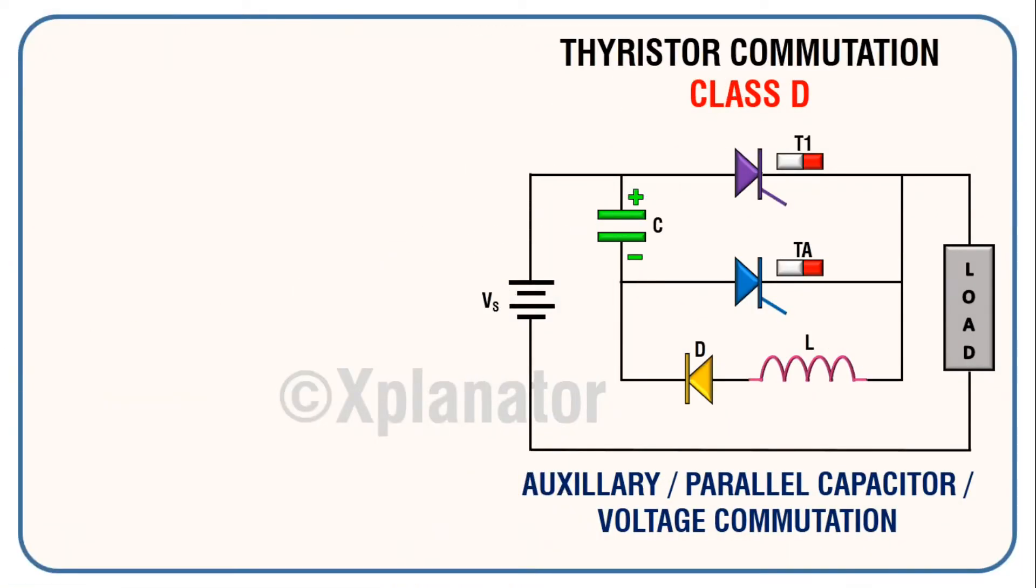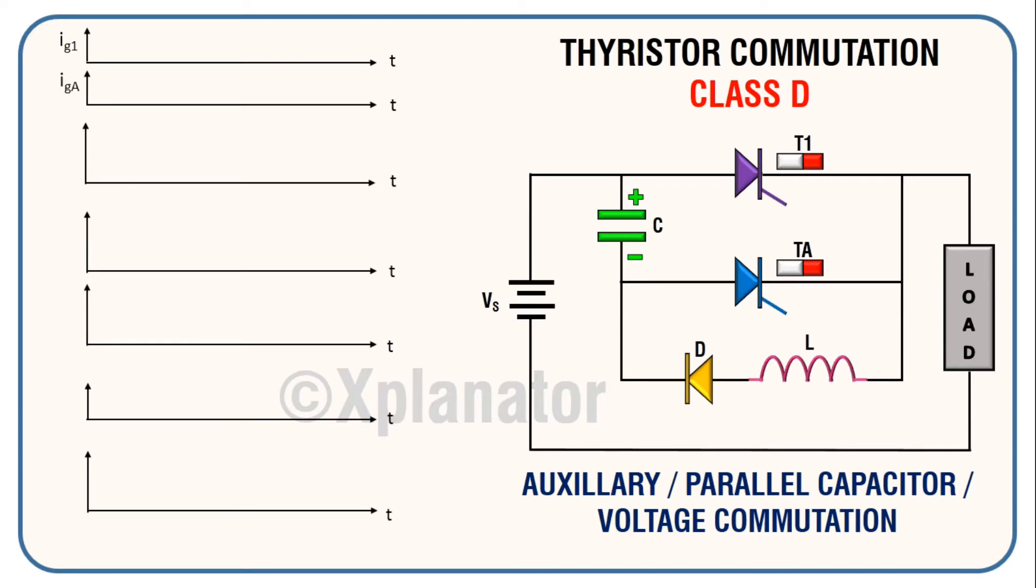Let's get these waveforms plotted. We have 7 plots to be drawn, all on the time axis. The first two are to indicate when thyristors T1 and TA are fired. Next two are voltage and current of thyristor T1. After that, voltage and current of capacitor. And last is the load current.